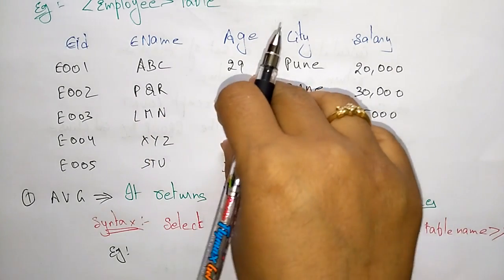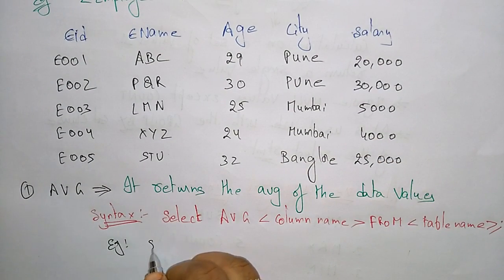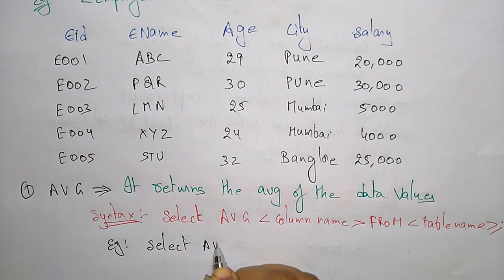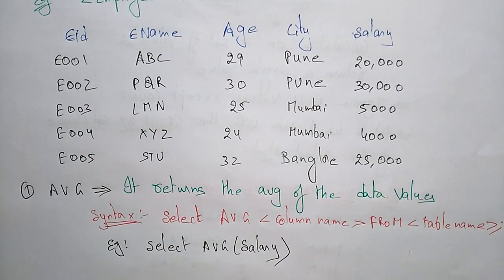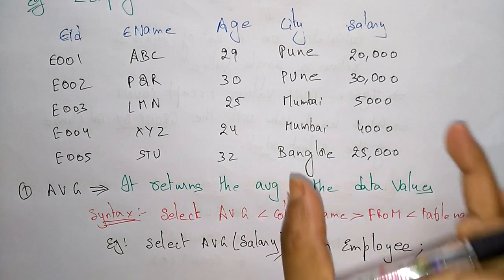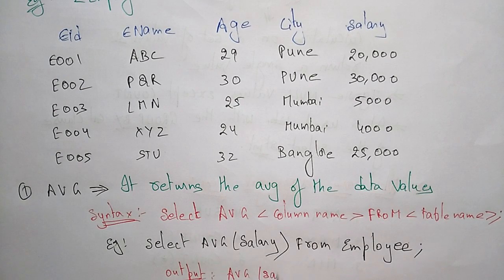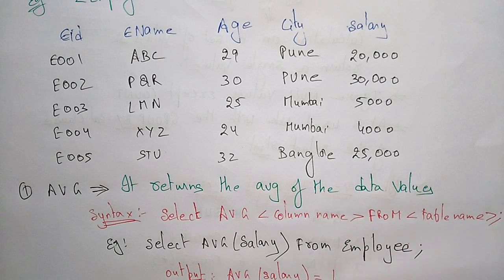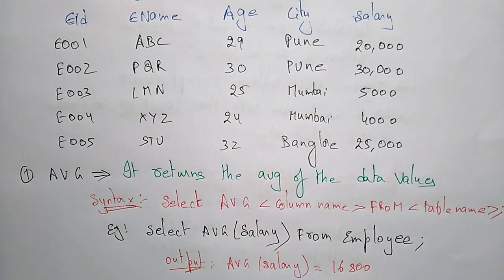Using the employee table, the example query is: SELECT AVG(salary) FROM employee. This calculates the average salary from the employee table. The output for this query is: average of salary = 16,800. So the total average of the salary column is 16,800.